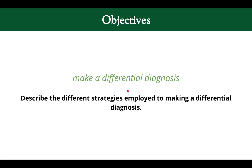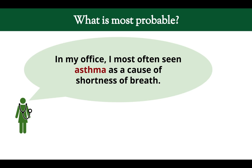The objective is to make a differential diagnosis, and we're going to describe the different ways you can do that. The first one is: what is most probable? Your differential diagnosis should include the most probable thing. So if you're working in an office and a patient comes in with dyspnea — shortness of breath — the most common cause in your office might be asthma.